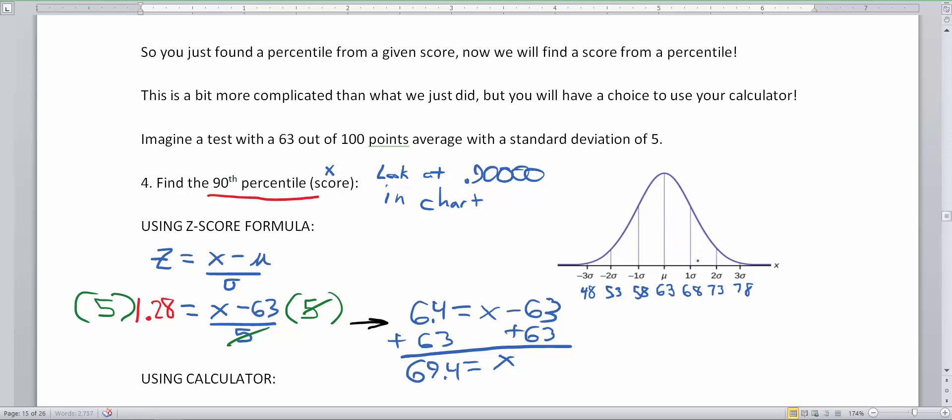So what this means is that this flag here at 1.28 standard deviations away from the norm, or 69.4 is the 90th percentile, which means that 90% of the data is below that blue line. Okay? So that's how we find a percentile.